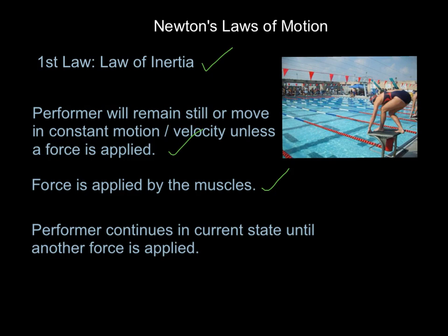The performer will then continue in their current state until another force is applied. Once she jumps off the block and overcomes her inertia, she moves through the air until another force — hitting the water surface — slows her down and changes her state again. Then when she drives with her arms and legs in the water, she applies another force to change her state further. Every time you apply force you move to a new state of inertia.